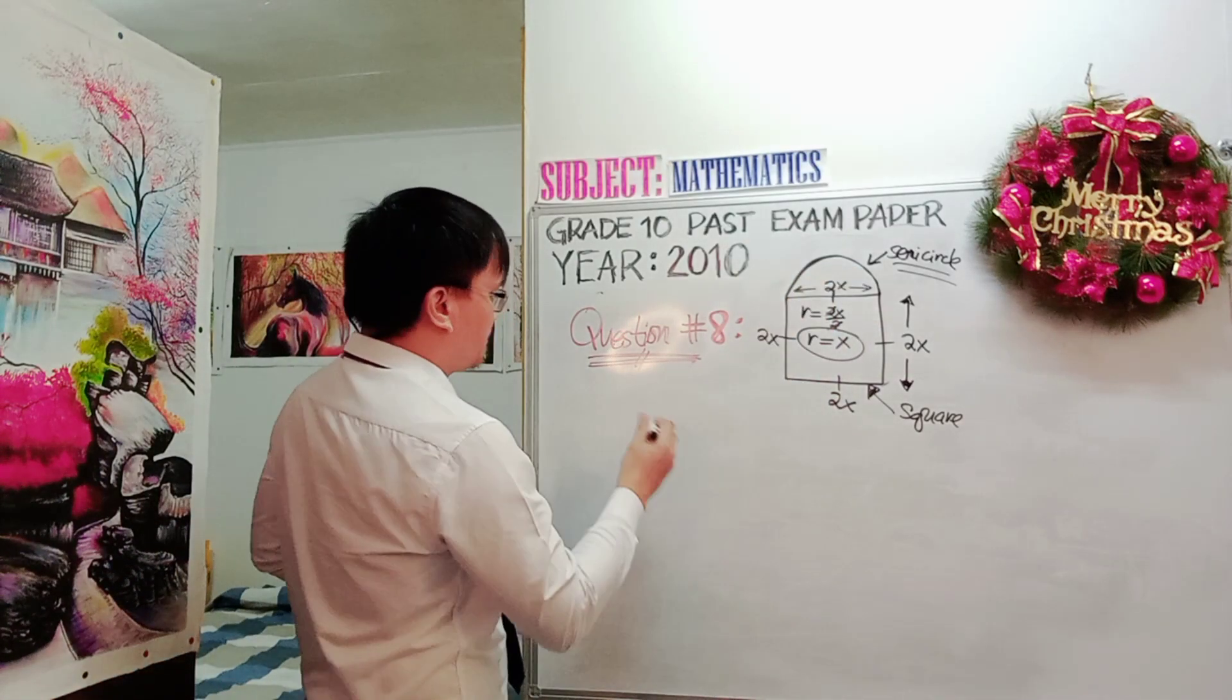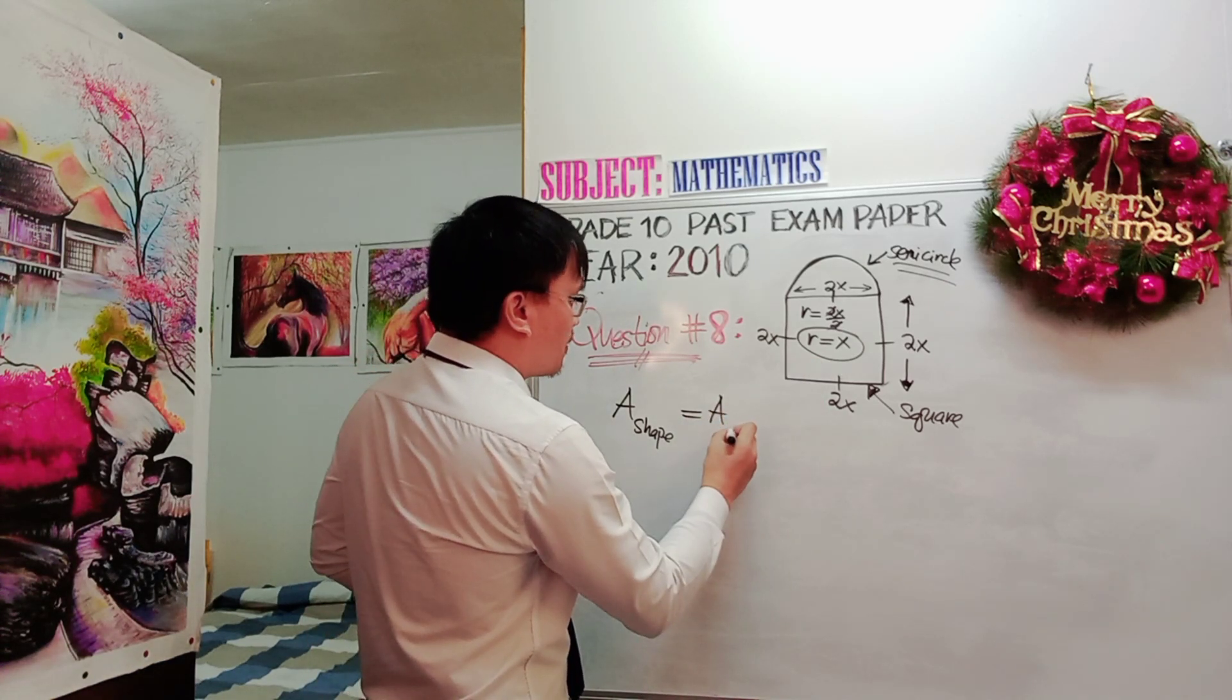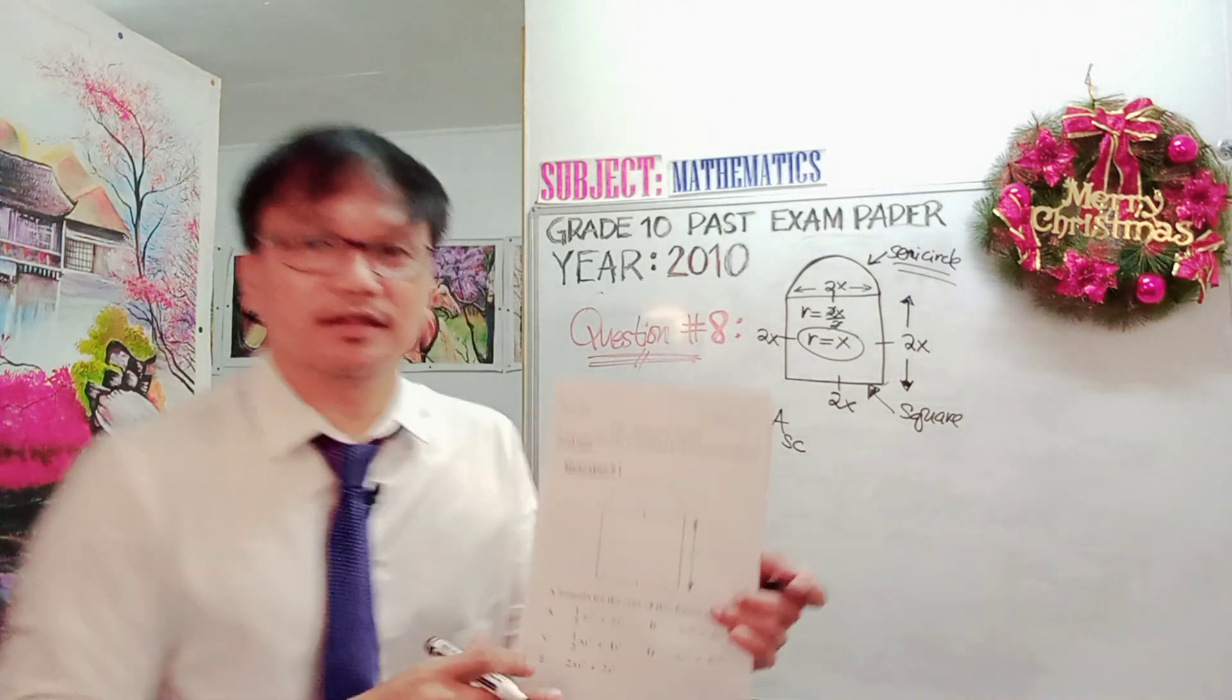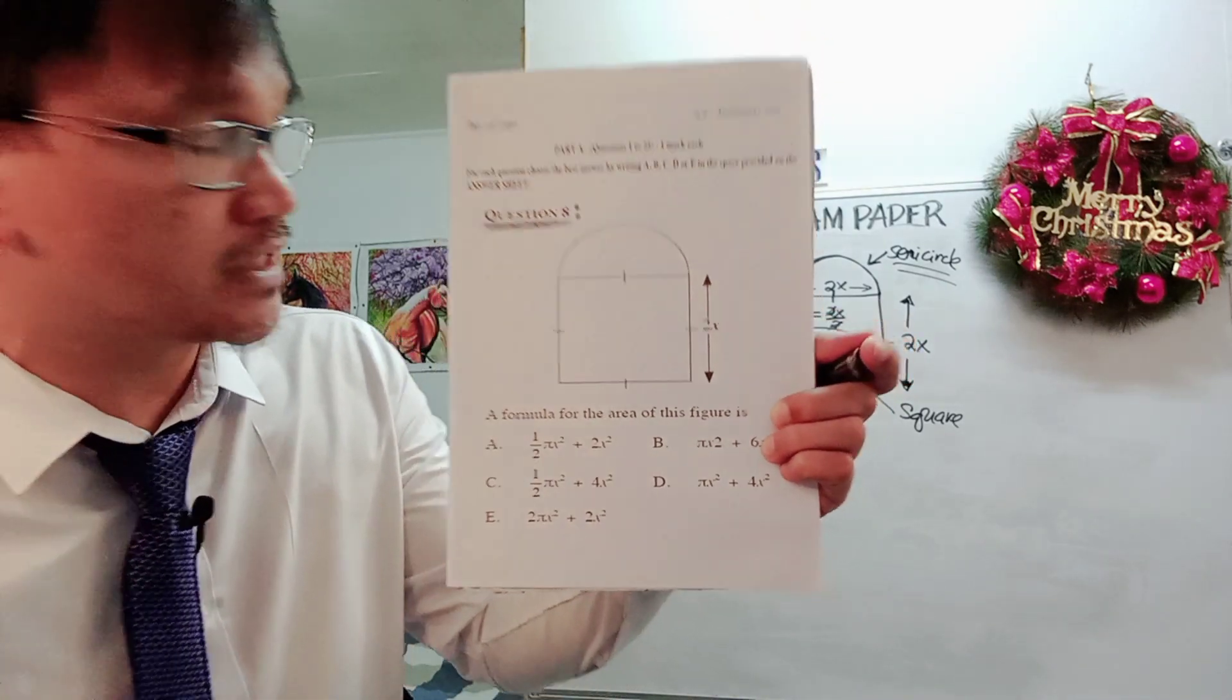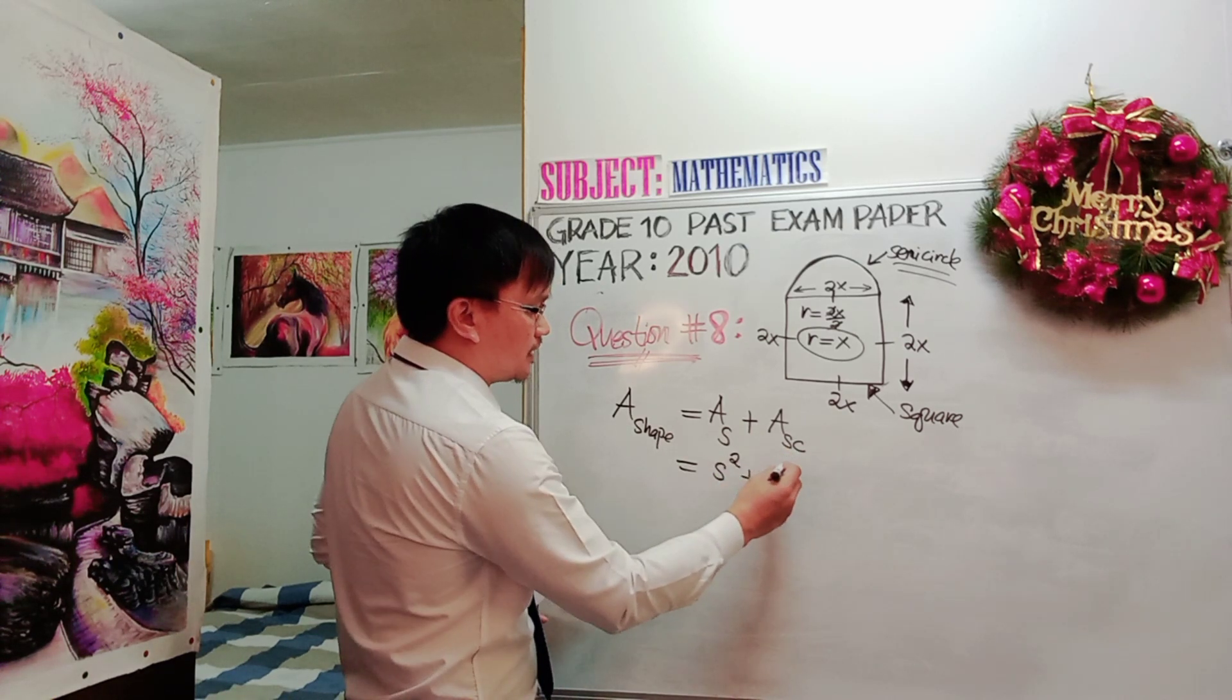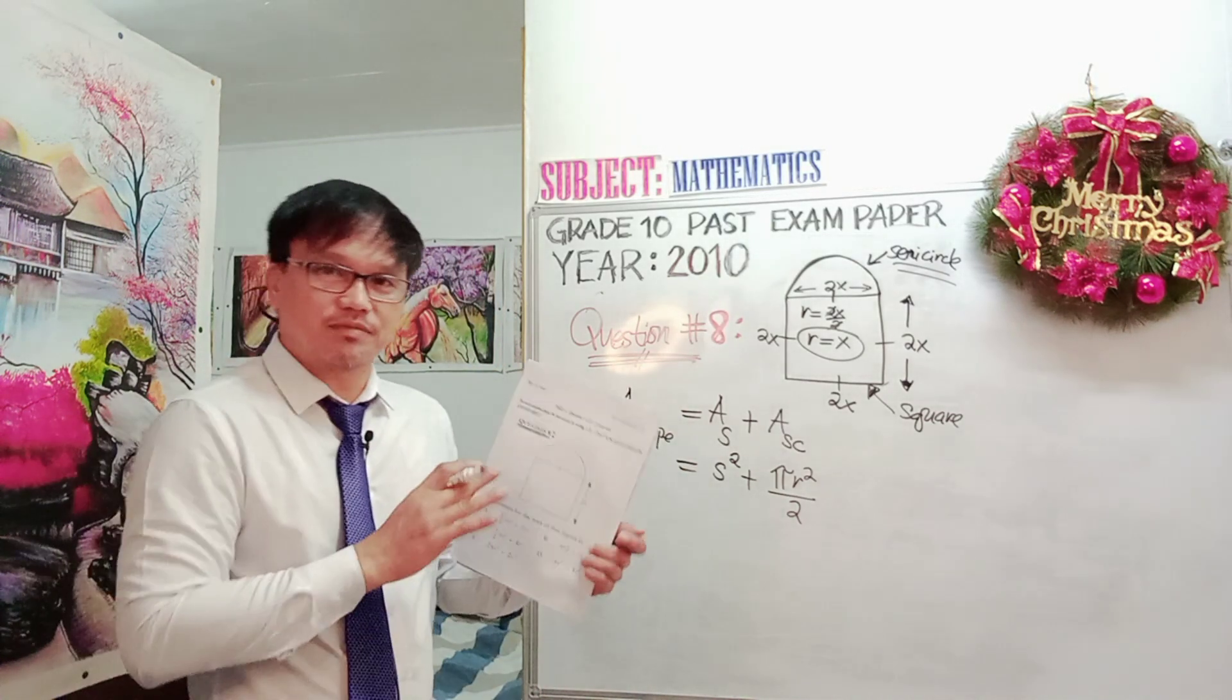First, let's have the area of the shape consisting of the area of the square plus the area of the semicircle. You remember the question asks you to find the formula of the area of the given composite shape. Now the area of the square is S to the power of 2 plus the area of the semicircle is pi r square divided by 2, or you can interchange it depending on the option.